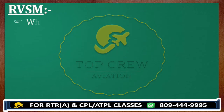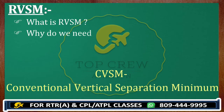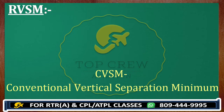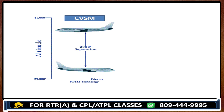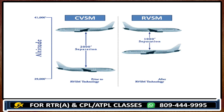So what is RVSM and why do we need it? Before that, I would like to tell you that earlier we used to follow CVSM — Conventional Vertical Separation Minimum. In CVSM, above Flight Level 290, we take a separation of 2000 feet. So why is this called 'reduced'? Because we have reduced the separation from 2000 feet to 1000 feet.